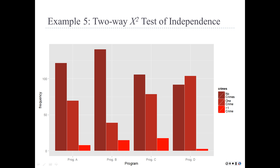Program C shows a lot of people committing one crime—it looks like people who should have been in the zero-crimes category have shifted to the one-crime category. That's not good; maybe the program is actually teaching people to be more criminal. Program D is quite problematic: a whole lot of people coming out of program D commit a crime. On the other hand, they're not committing more than one crime—just one crime.